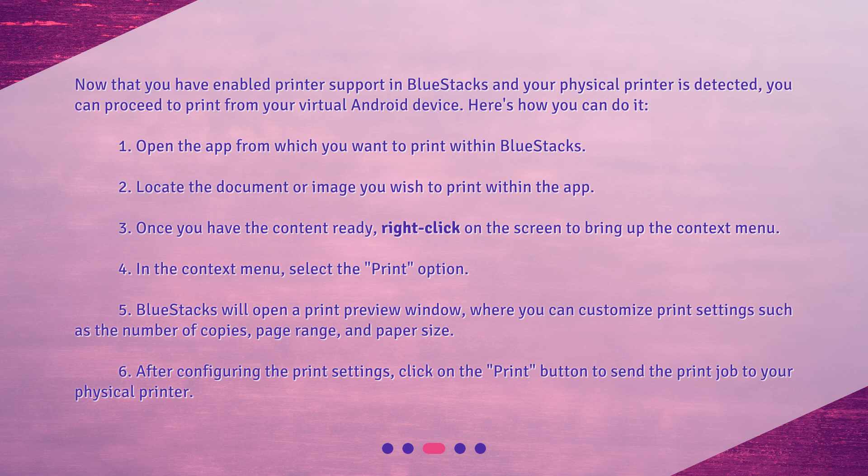Here's how you can do it. 1. Open the app from which you want to print within BlueStacks. 2. Locate the document or image you wish to print within the app. 3. Once you have the content ready, right-click on the screen to bring up the Context menu. 4. In the Context menu, select the Print option.